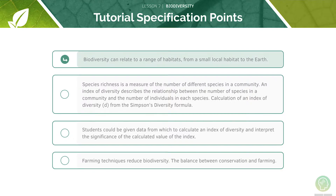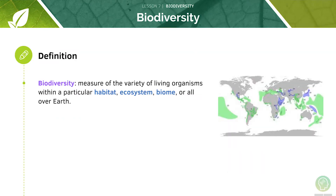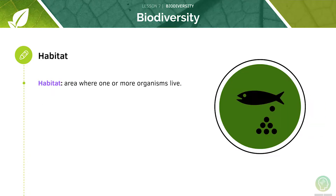First we will look at biodiversity. Biodiversity is the measure of all variety of life within a particular habitat, ecosystem, biome or all over the earth. A habitat is the area where one or more organisms live. For example, a pond could be a habitat of a fish.